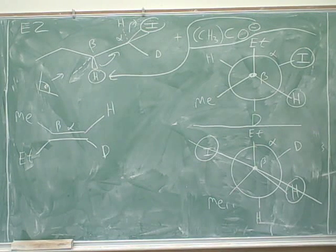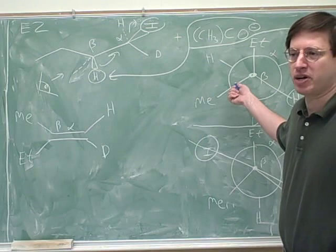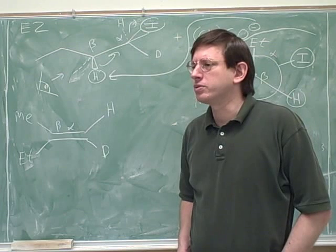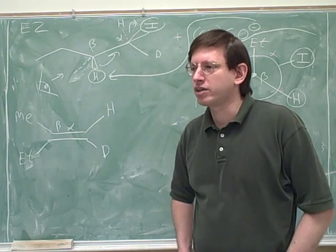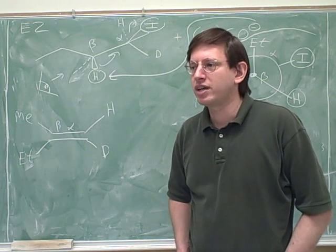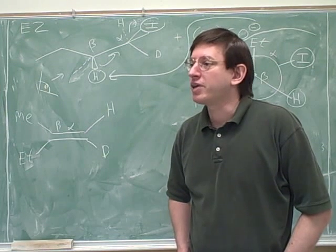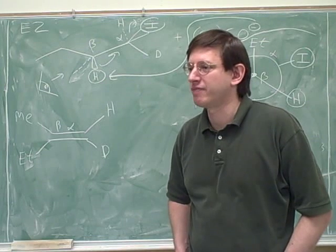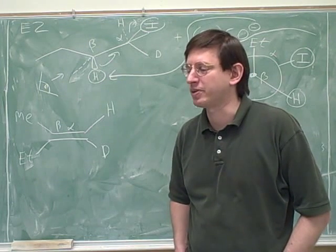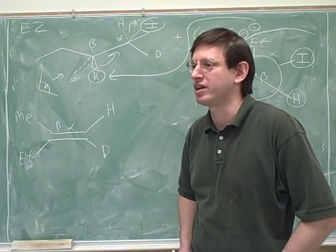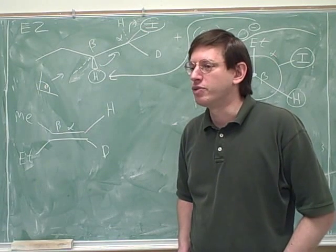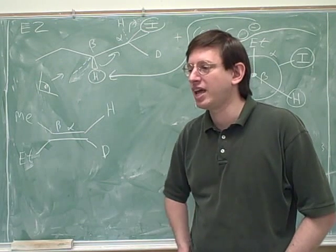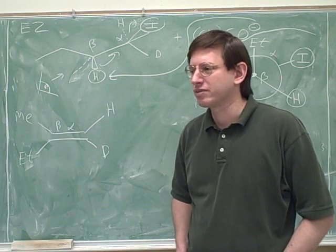Normally that's no problem because normally we can just rotate to get that anti-periplanar transition state. There are some molecules that have limited flexibility, though — molecules that have rings. A ring gives you limited flexibility, so a ring might not be able to get an anti-periplanar transition state, and then it might not be able to have an E2 reaction. That would be an advanced application of this, but it might be on the test. A ring might not be able to rotate to an anti-periplanar transition state, and if it can't, then it can't do an E2 reaction.